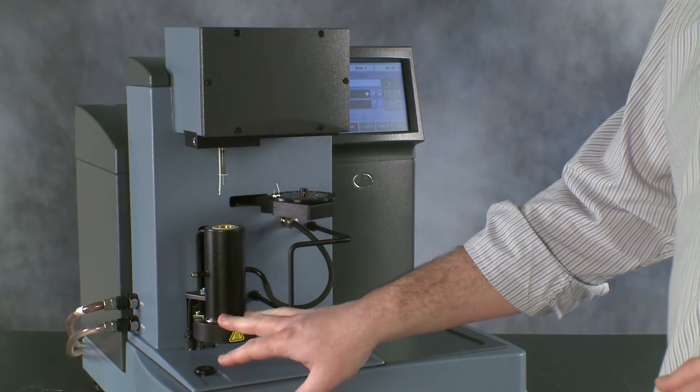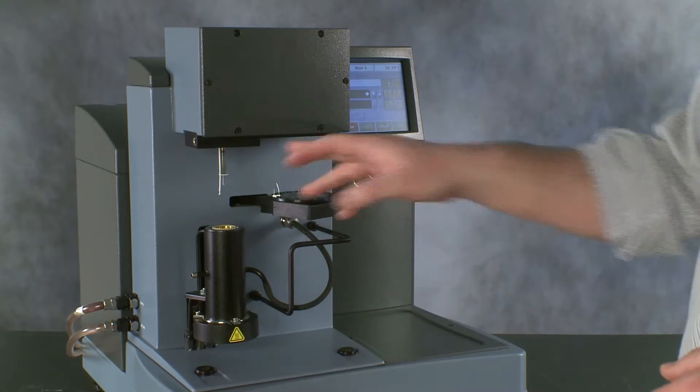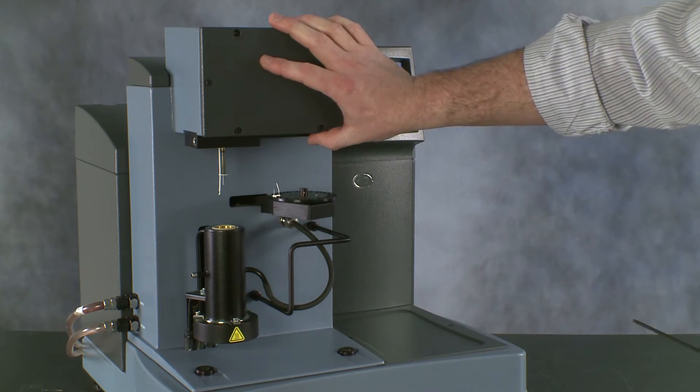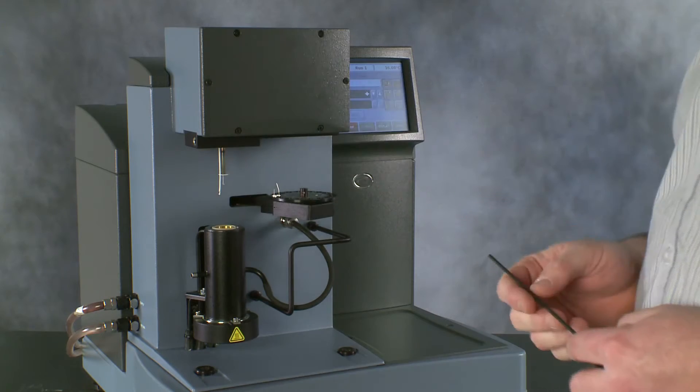To replace the hang down wire, we need to make sure our furnace is in the low position, so we can get access to the base of the hang down wire, and we need to remove the balance housing cover. That's held on by the six screws on the front of the cover.